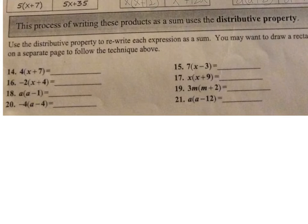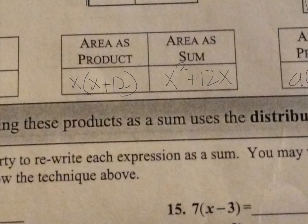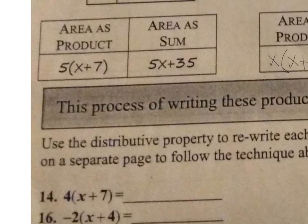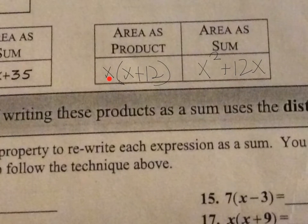So what this process has been doing is writing these products as the sum using the distributive property. Let's go back and take a look here. It might be a little bit easier to see using this first example. The area of the product is 5 times x plus 7. Well, the distributive property says 5 times the quantity of x plus 7. You can distribute the 5 across the addition. Meaning you can do 5 times x, or 5x, plus 5 times 7, or 35. These are equivalent expressions because they find the area of the same rectangles. Over here, you have x times x plus x times 12. So x times x is x squared plus x times 12 is 12x.